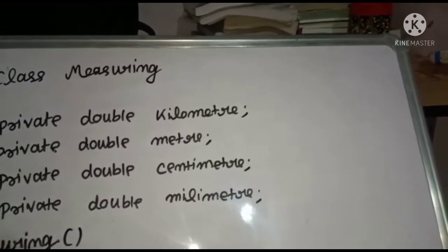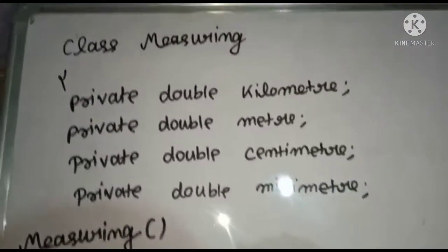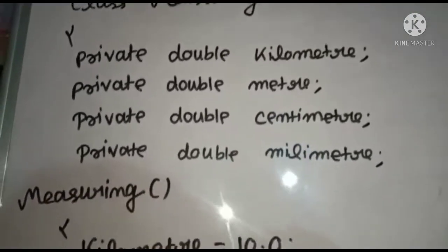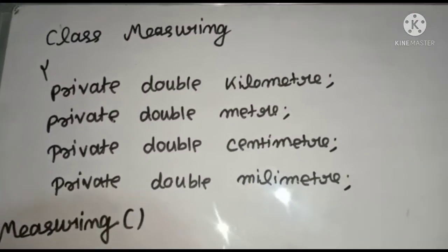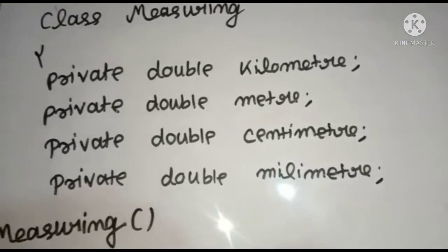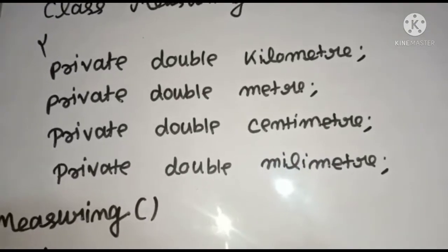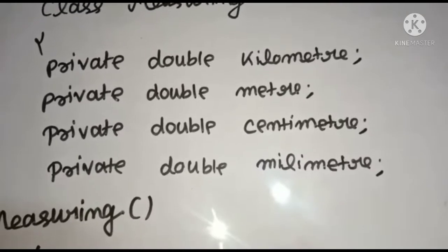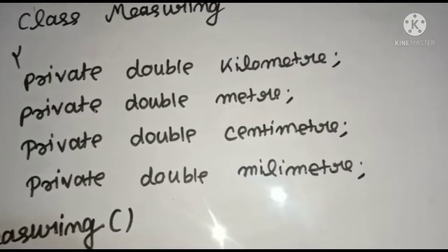Default constructor accepts no arguments. So here we have a class measuring. We have declared some values. Private double kilometer we have declared some value. Private you can see. Private is access specifier. Double is data type.